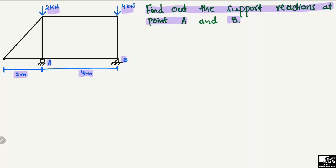To find the support reactions, Ra is the vertical support reaction at A, and RB is the reaction at B. The pin support at B can also take a horizontal load RB_x, but in this case it equals zero because there is no horizontal load acting on this structure — only vertical loads.